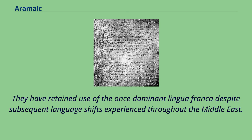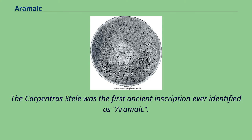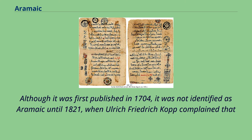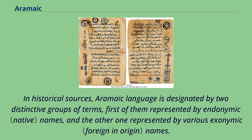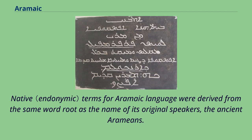The Carpentrastele was the first ancient inscription ever identified as Aramaic. Although first published in 1704, it was not identified as Aramaic until 1821, when Ulrich Friedrich Kopp complained that previous scholars had left everything to the Phoenicians and nothing to the Aramaeans, as if they could not have written at all. In historical sources, Aramaic is designated by two distinctive groups of terms: endonymic names and exonymic names. Native terms for Aramaic were derived from the same word root as the name of its original speakers, the ancient Aramaeans. Endonymic forms were also adopted in some other languages, like ancient Hebrew.